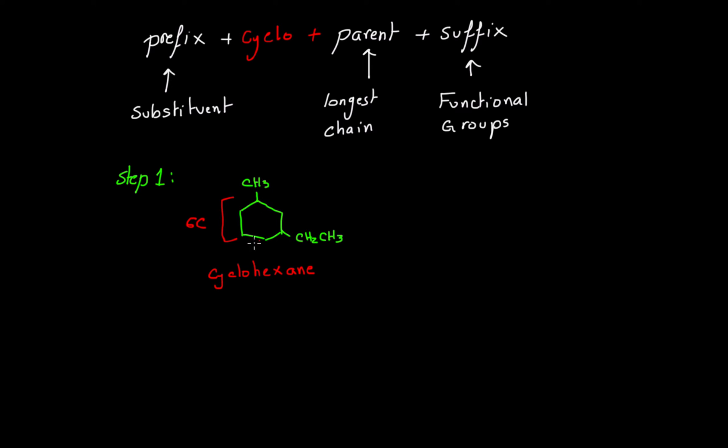So the parent is the cyclohexane which makes the longest chain in this hydrocarbon. Step 2, you need to number the substituents. Now if you have one substituent on the cycloalkane, for example cyclohexane, you don't need to give it a number.